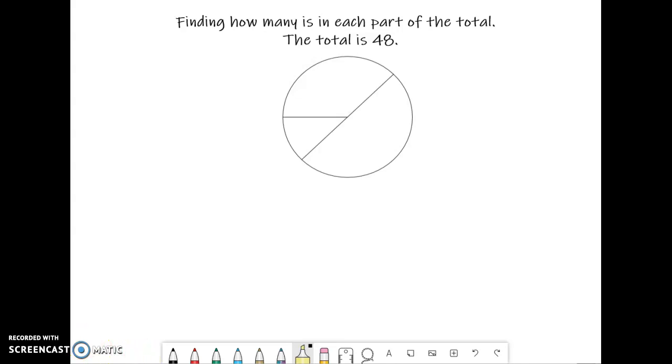When you're dealing with circle graphs, you often need to find out how many each section is. So we know the total is 48. That means the entire circle.